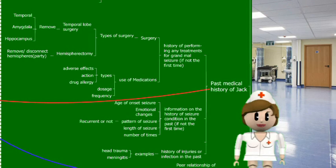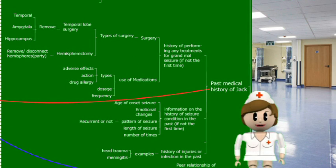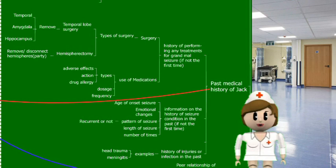Assuming this is not Jack's first seizure, we should assess his history of treatments for grand mal seizure — for example, any prior surgery or medications. We should also assess the history of past seizure conditions, such as age of onset, emotional changes, pattern, length, and number of times. Additionally, we should ask parents about any history of injuries or infections such as head trauma and encephalitis.